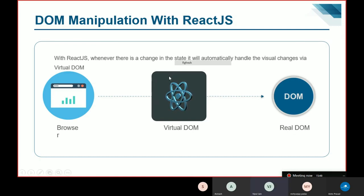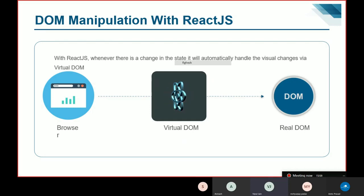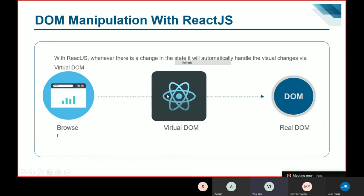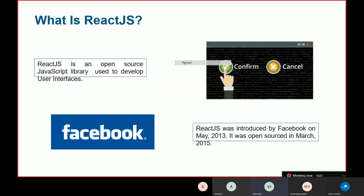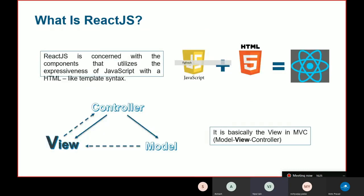React's solution is the virtual DOM. For every real DOM object, there is a corresponding virtual DOM object — a lightweight copy of the real DOM. Whenever there is a change in the state of an object, React automatically handles the visual changes via the virtual DOM. React.js is an open source JavaScript library introduced by Facebook — remember, it is a library, not a framework. In the MVC (Model-View-Controller) model, React is only concerned with the View part, not the Model or Controller.